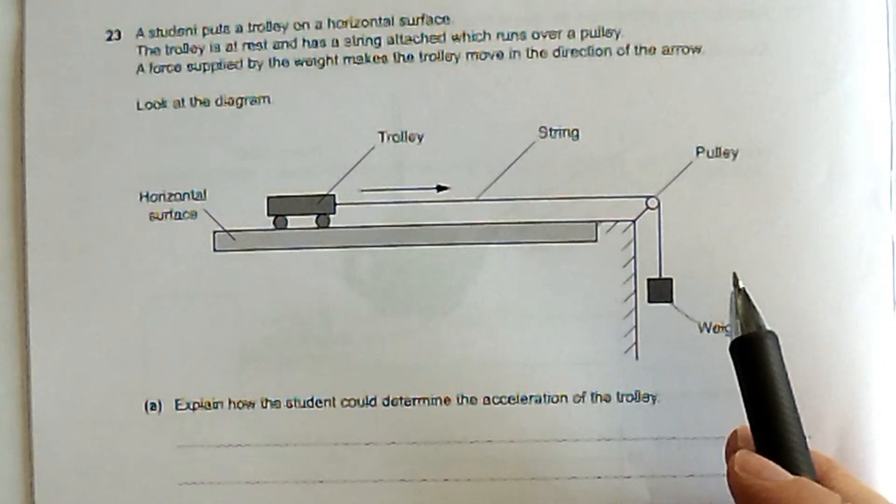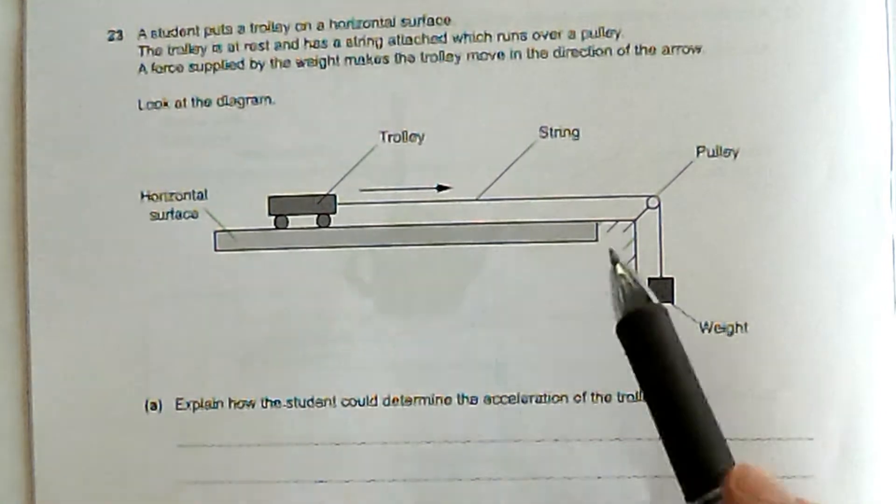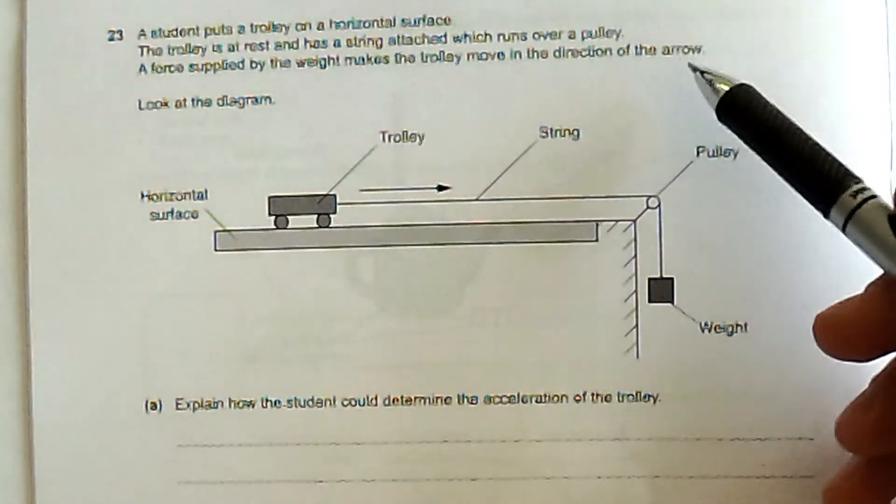So a student puts a trolley on a horizontal surface. The trolley is at rest and has a string attached which runs over a pulley. There's a pulley there. Force supplied by the weight makes the trolley move in the direction of the arrow. Look at the diagram.